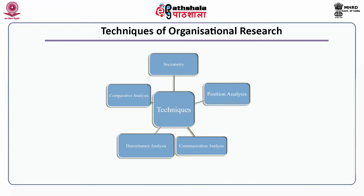Now let us discuss the techniques of organizational research. There are mainly five techniques. Number one is sociometry. In this technique, all the members of a group are requested to point out their relationship on a particular dimension with every other member of the group. For example, an assignment can be given to name those people whom they like and from whom they want to get something done. Another task can involve providing the number of messages sent in the last one month. The researcher, by merging all responses, will be able to figure out the relationships, skill ratings, and effectiveness of messages.